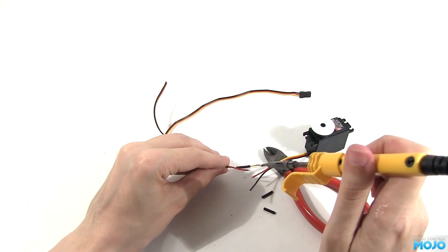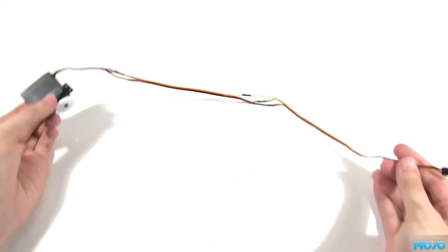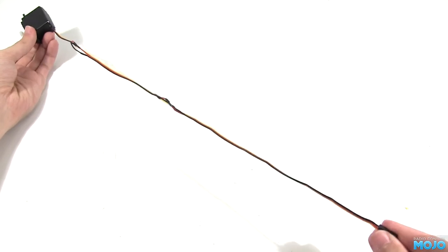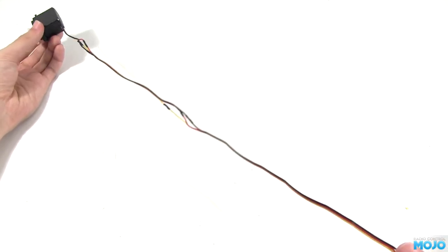Repeat at the other end and you should have something like this. It will be more corrosion resistant, and there's no extra connector to come loose.